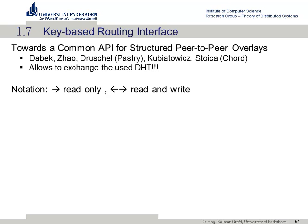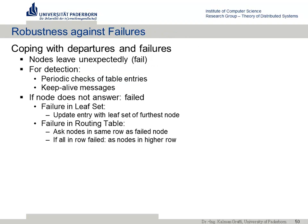The key takeaway from Pastry is that it introduces a different kind of routing table — not just one specific table, but also the leaf set, which is very important to maintain. You always need to know the 10 or 20 closest IDs to your own ID, and keep this up to date. When a message arrives, you can reliably decide which node is responsible and not leave it to random chance.